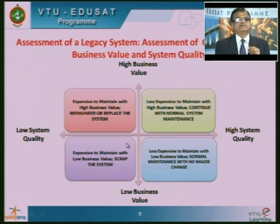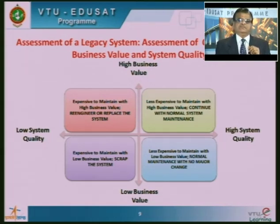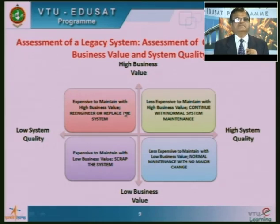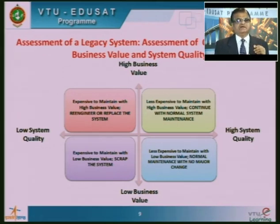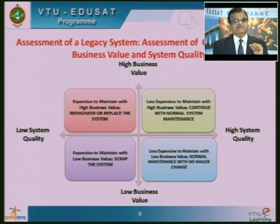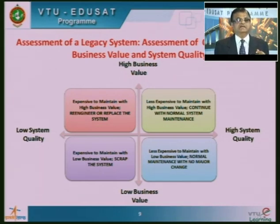In the second quadrant — low system quality but high business value — though we invest heavily in development to incorporate new changes and invest more on regression testing and rolling out, the value we are getting is quite justifiable, so we have to continue with the legacy systems. We have to decide on re-engineering or replacing the system. If we find some alternative system at a cheaper cost than upgrading this particular product, then possibly we may replace it.